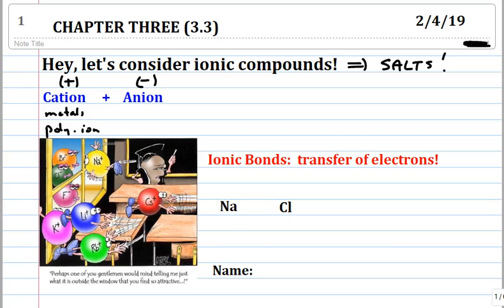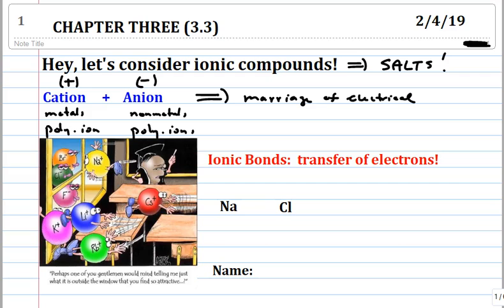Where do we get anions from? Atoms of nonmetals will gain electrons to make anions. We get these from nonmetals, and we have several polyatomic ions that are anions. We are going to arrange these into what I call a marriage of electrical neutrality. You always combine cations and anions such that when combined together in an ionic compound, a salt, there's no net charge.